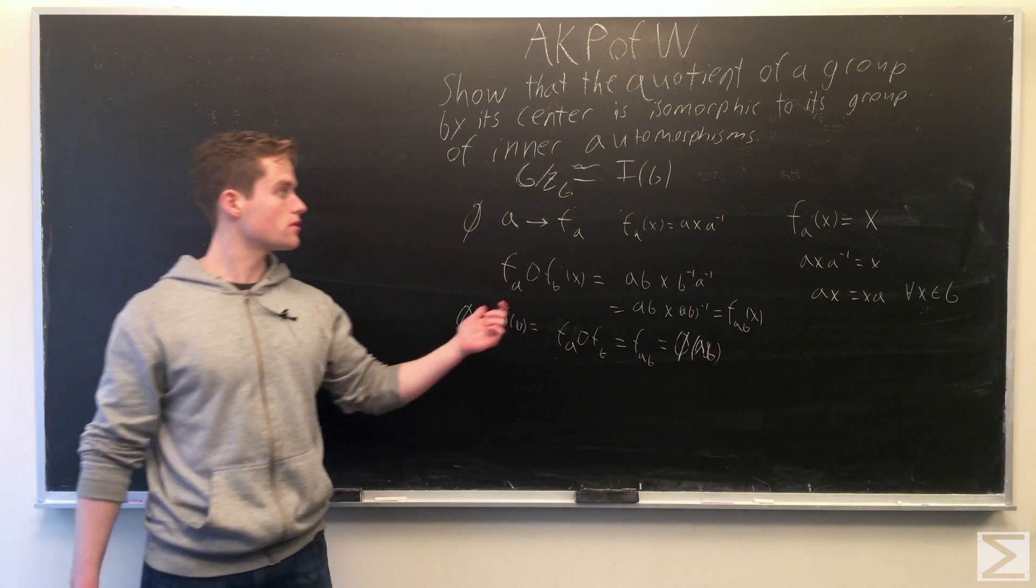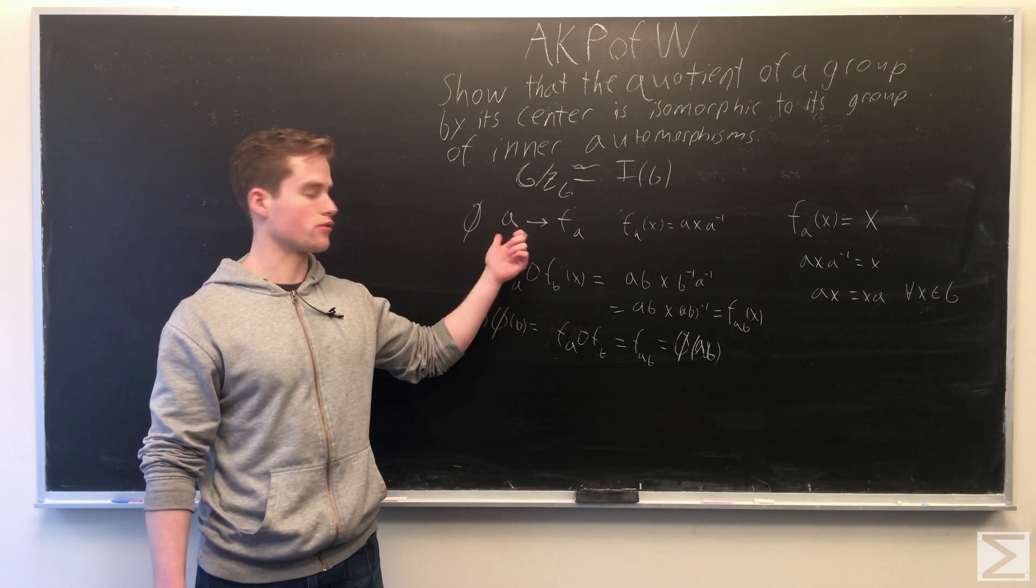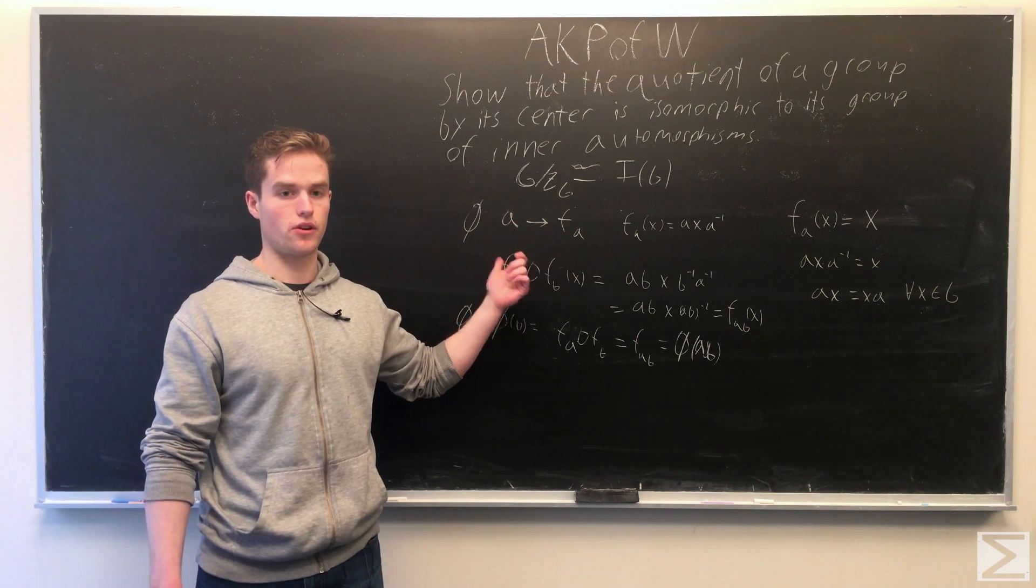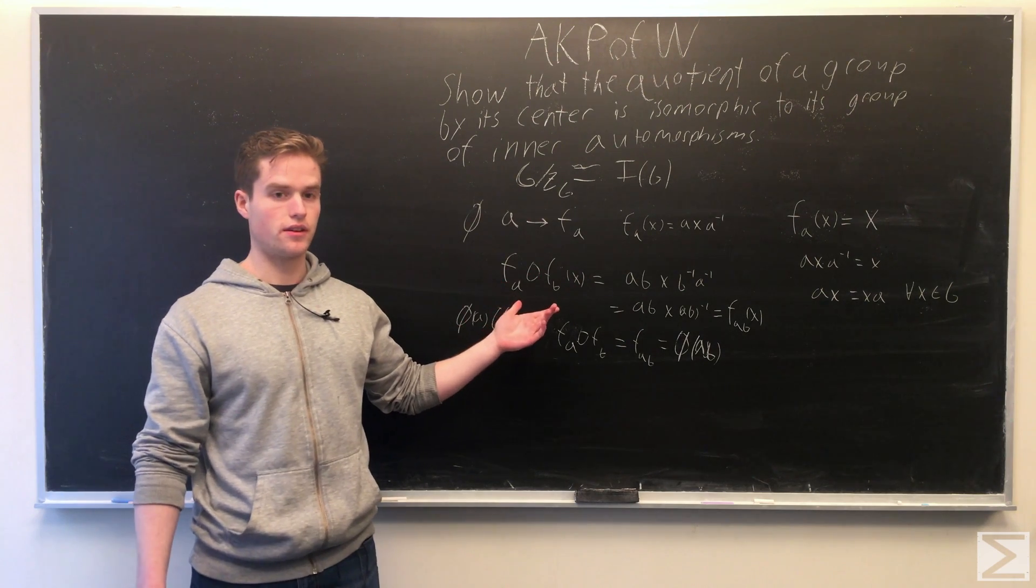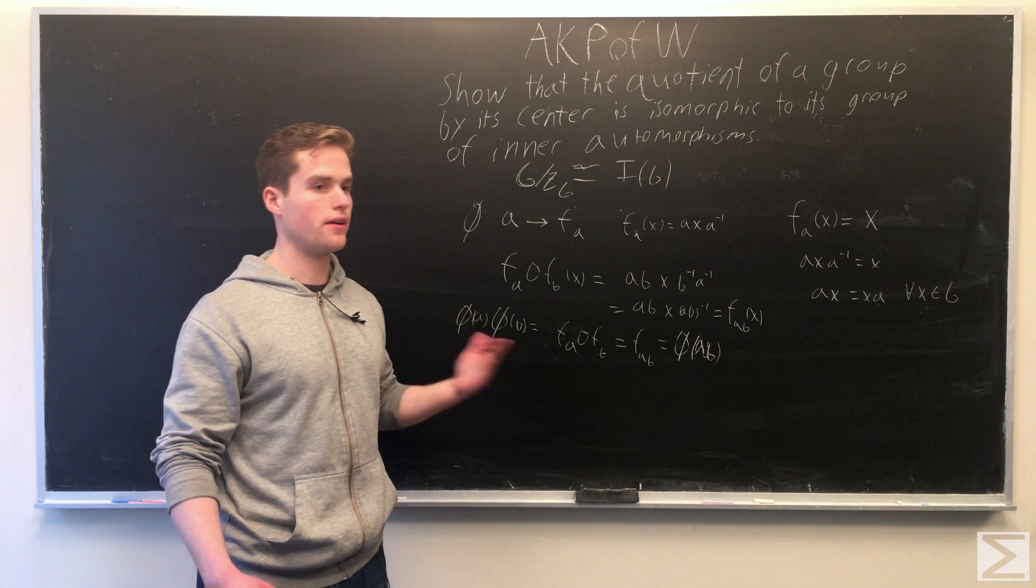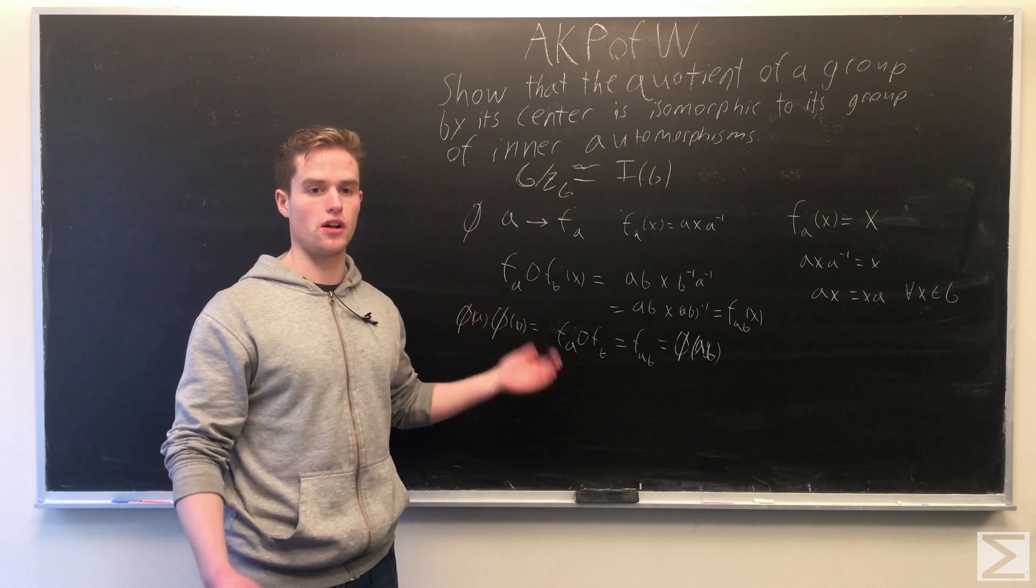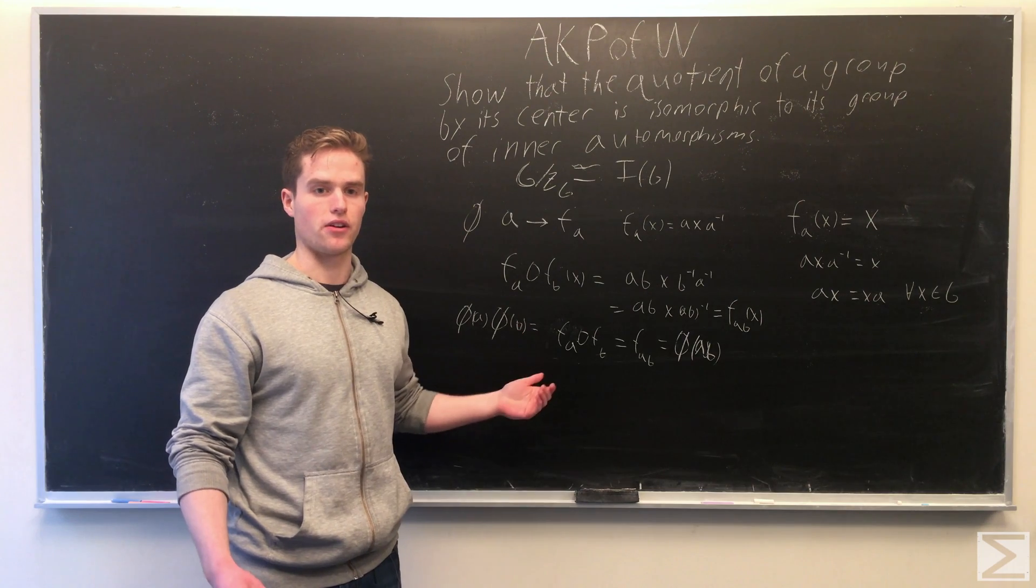We take the quotient of G with the kernel, which is the center, and by the first isomorphism theorem, this is isomorphic to our image, which is all of the inner automorphisms.